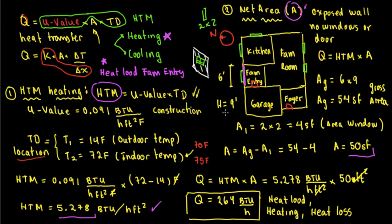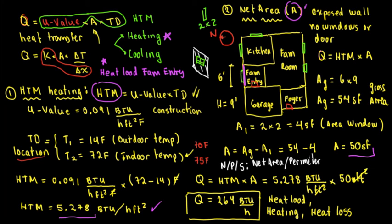In WriteSoft, this net area is also called NPS. NPS stands for net area slash perimeter and shaded area — it's a general term. So if you ever use WriteSoft to do heat load calculations for residential, there is a part where you're going to see NPS — that's pretty much the net area.